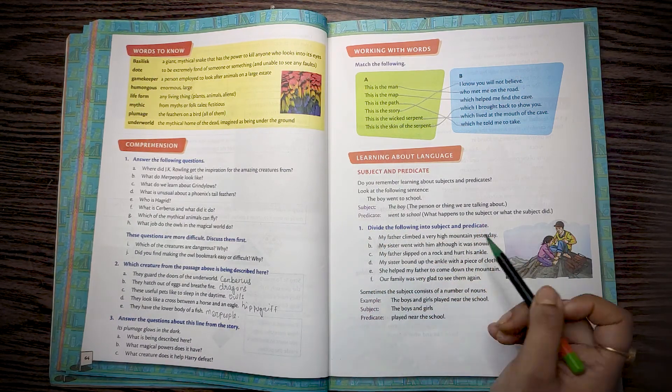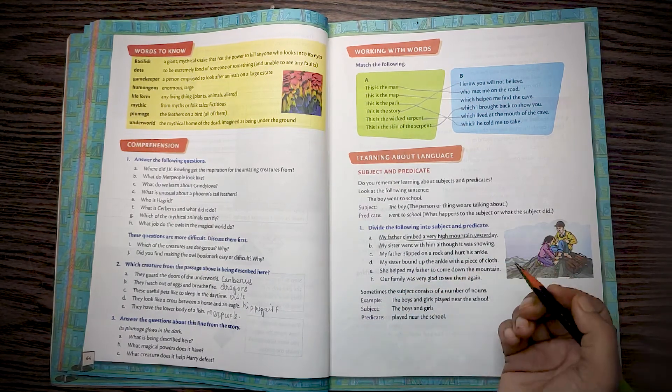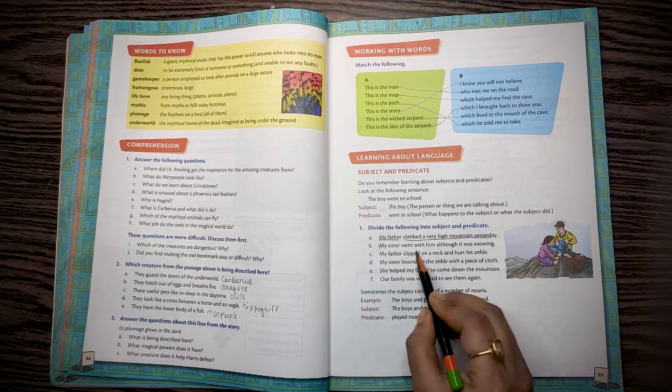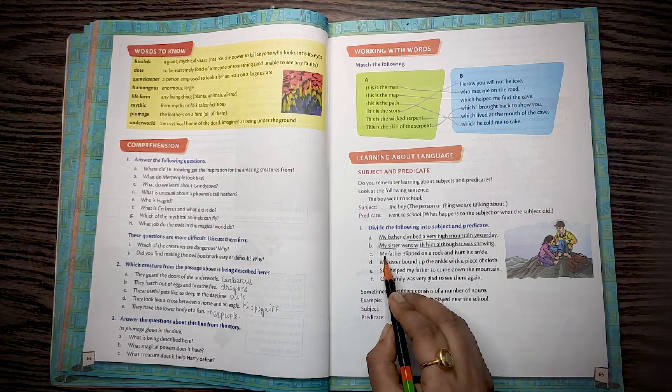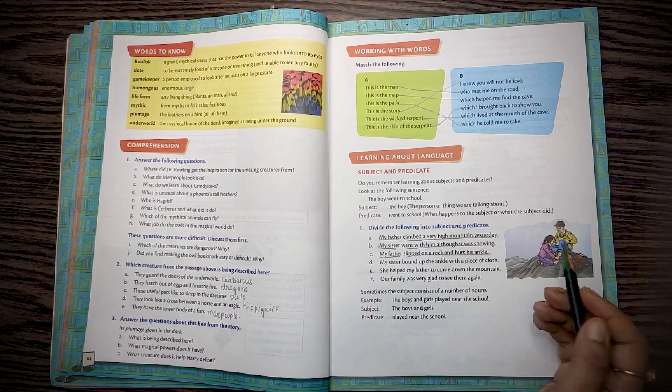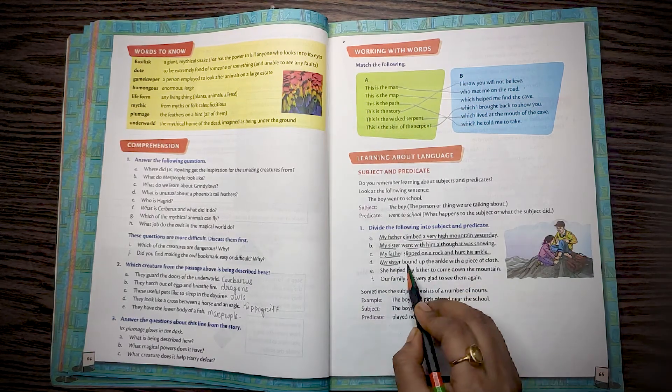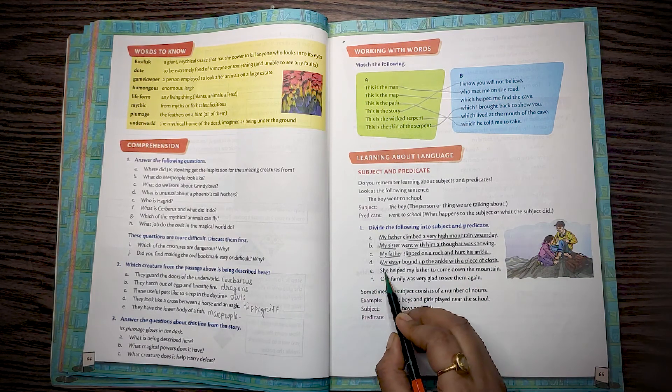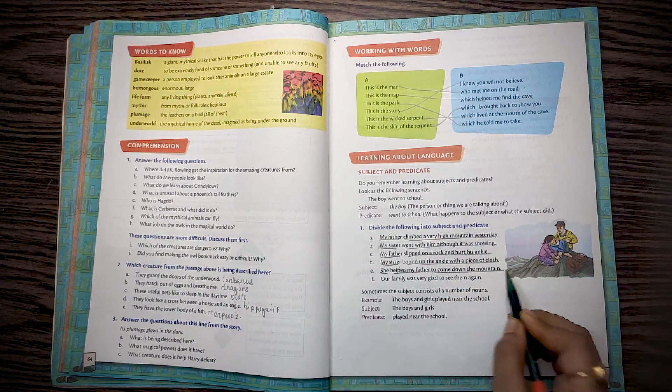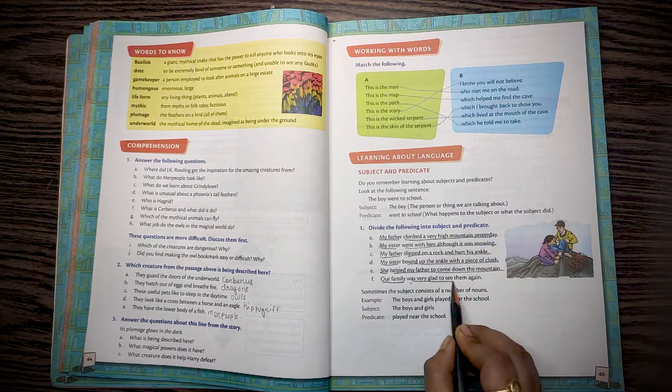Number 1: Divide the following into subject and predicate. My father climbed a very high mountain yesterday. My father is subject, climbed a very high mountain yesterday is predicate. My sister went with him although it was snowing. My sister is subject, the rest part is predicate. My father slipped on a rock and hurt his ankle. My father is subject and rest part is the predicate. My sister bound up the ankle with a piece of cloth. My sister is subject and the rest is predicate. She helped my father to come down the mountain. She is the subject and rest part is the predicate. Our family was very glad to see them again. Our family is the subject and rest part is the predicate.